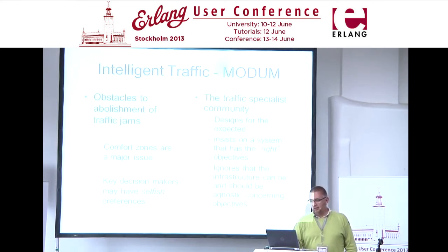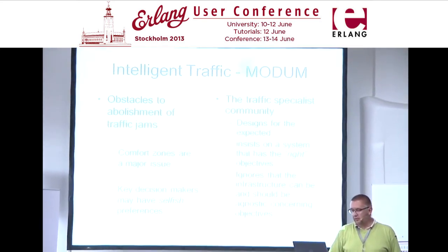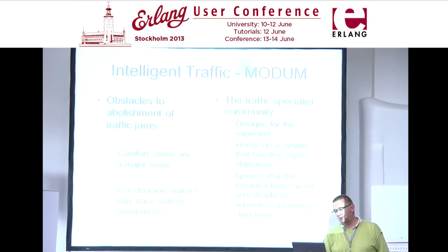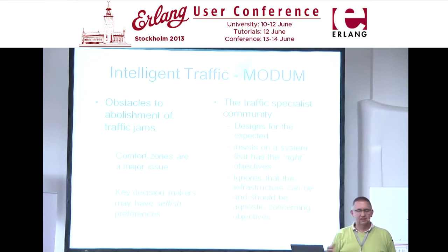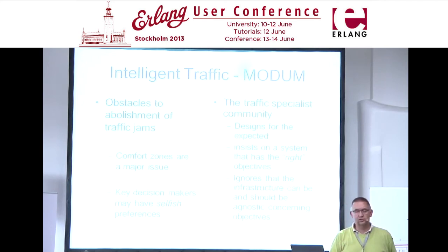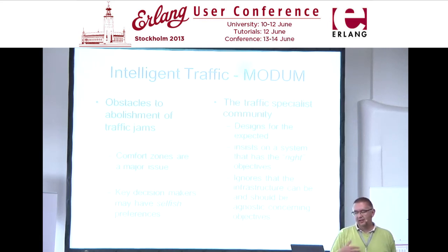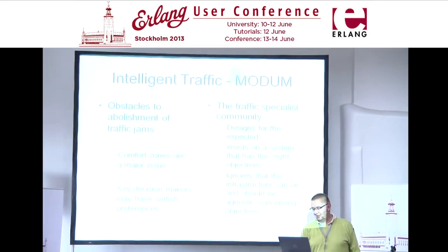What are the major obstacles to enjoying this kind of comfort? First, the traffic specialists who still believe they know the right objectives, although they have no idea how their customers — travelers — will react once things are deployed. They still ignore that it's possible to build an IT infrastructure — a first layer — which is agnostic, which doesn't make the choices, and that they can, with much less effort, try out and change different versions of how to manage the system. They also have selfish preferences in the sense that they like to see money go to things they like to play with.